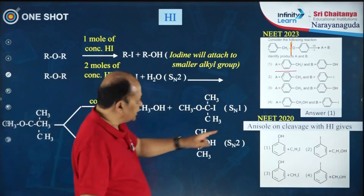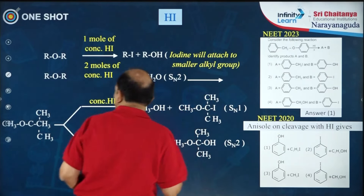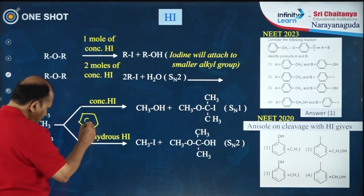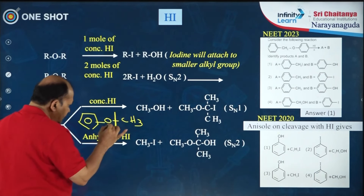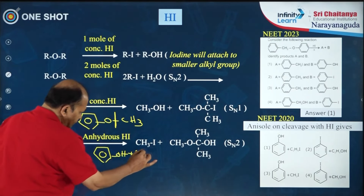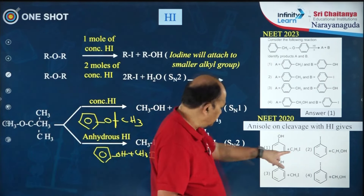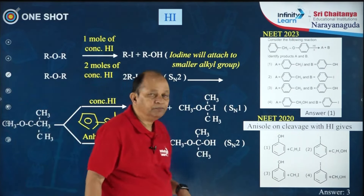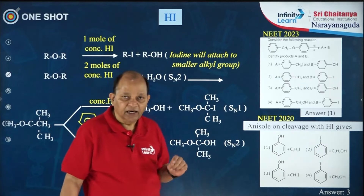Next, from NEET 2020: anisole on cleavage with HI gives what? Anisole is methoxybenzene. The cleavage takes place at the oxygen–methyl bond, so you will get phenol and methyl iodide as products. The answer is option 3. These are the questions asked based on the applications of the reagent hydrogen iodide.